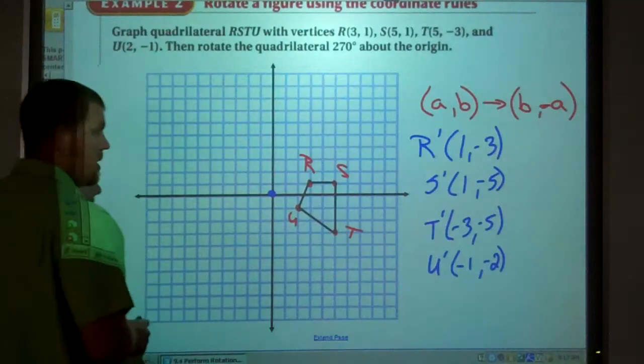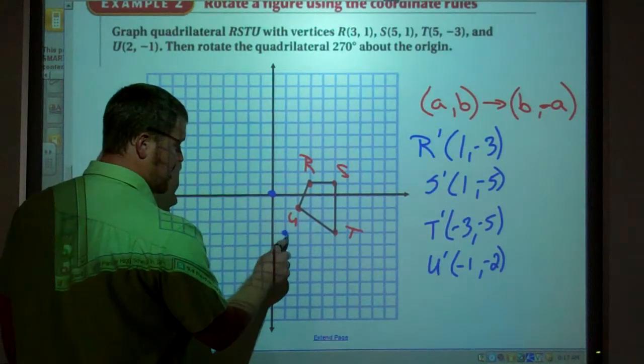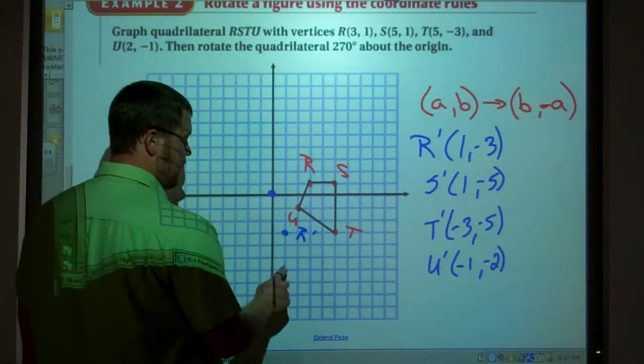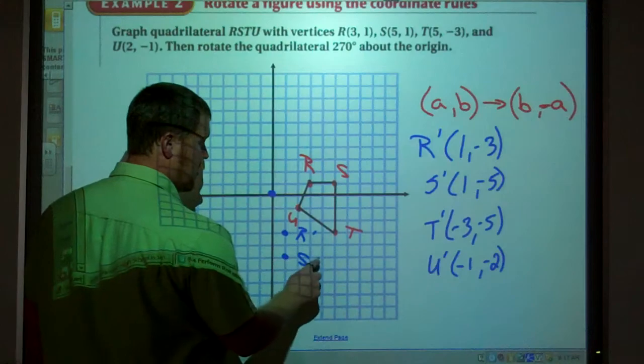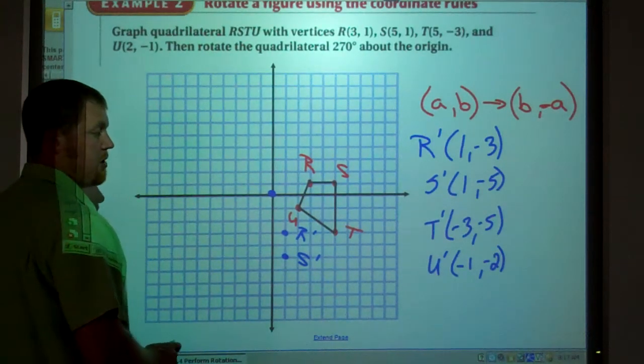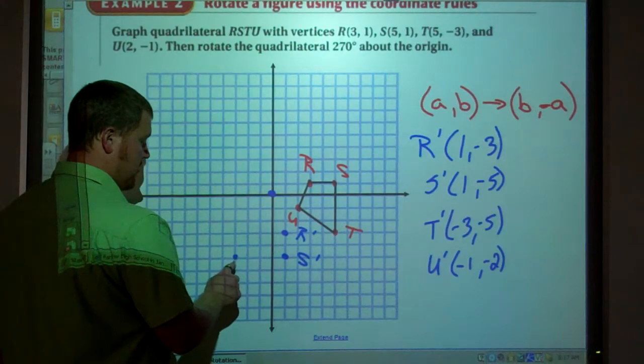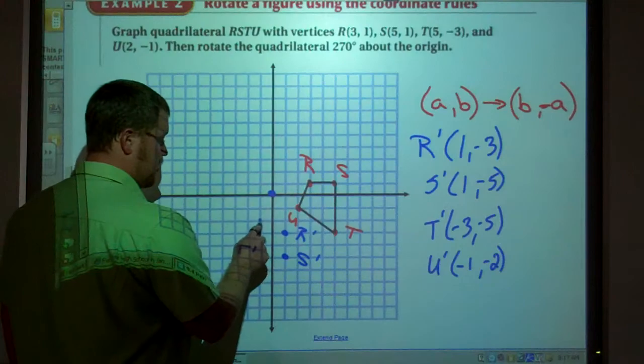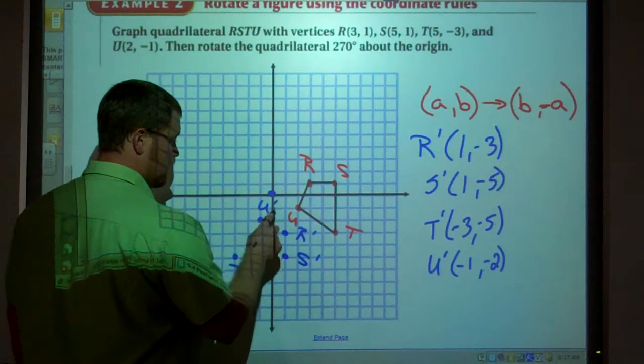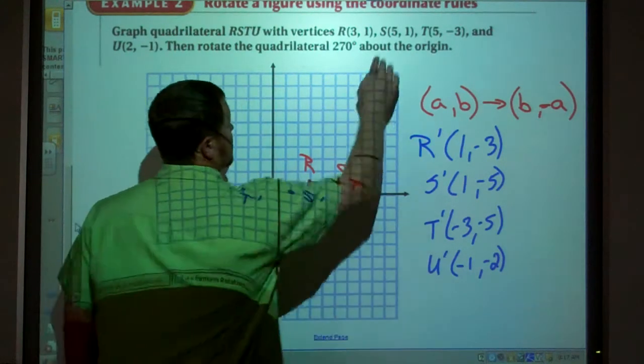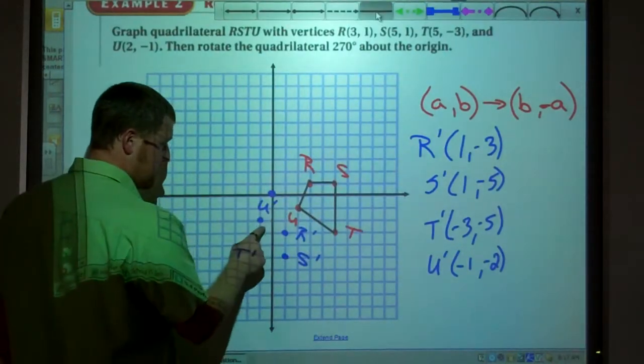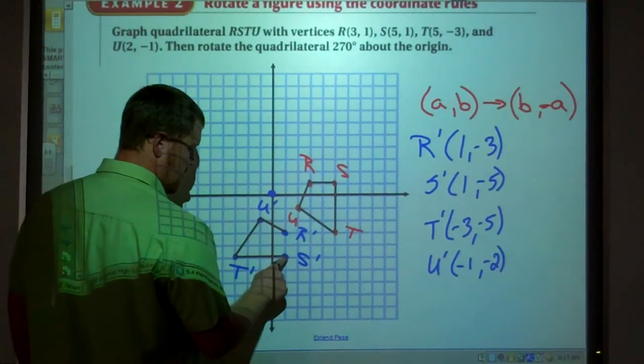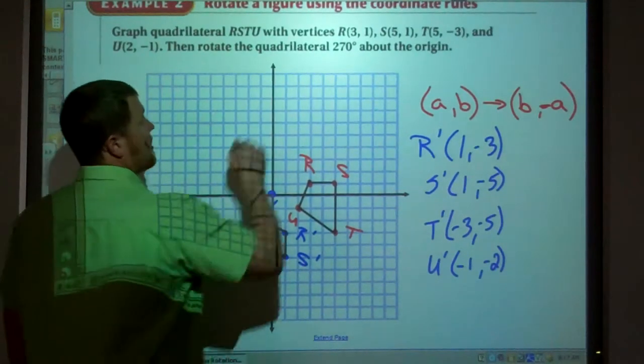R' is (1, -3). There's R'. S' is (1, -5). T' is (-3, -5). And U' is (-1, -2). So again, I've got my figure.